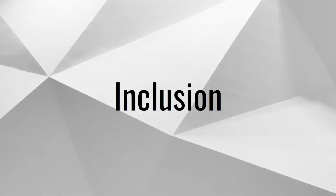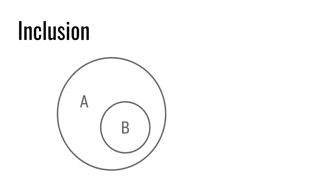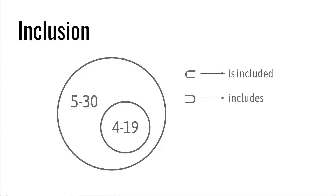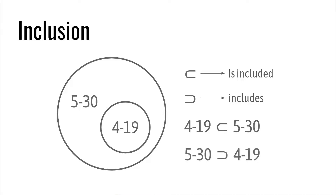The next concept is inclusion. You may remember this one from your math classes at school. A set may be included within another set of a higher cardinal, or it may include other sets of lower cardinal. In the first case, we say that the set is a subset. In the second case, it is a superset. For example, 4-19 is a subset of 5-30, which is of course a superset of 4-19. In mathematical set theory, this type of relationship is represented by these symbols. The first means 'is included,' and the second means 'includes.' From a musical point of view, these relationships are equivalent to those that occur in tonal music, when one chord is contained within another — for example, B-flat major is contained within G minor 7.